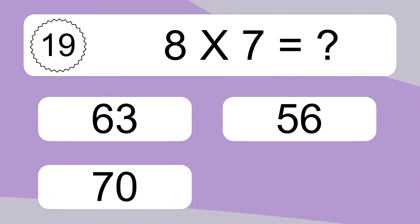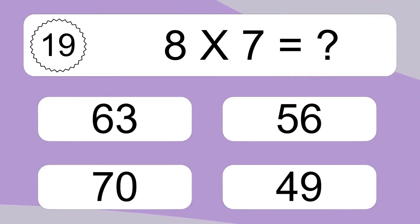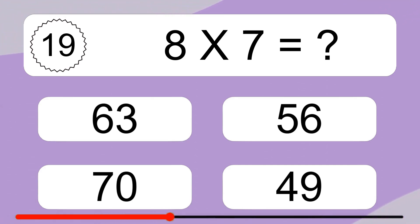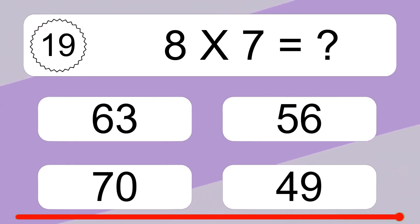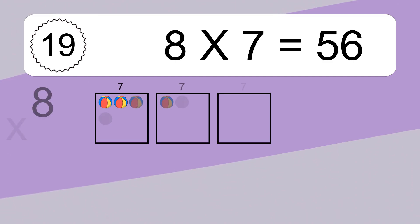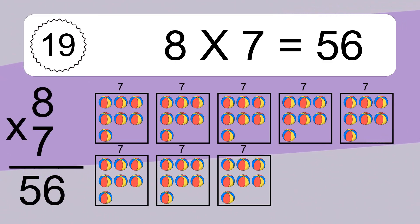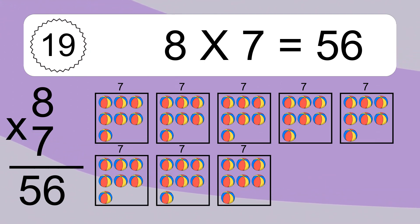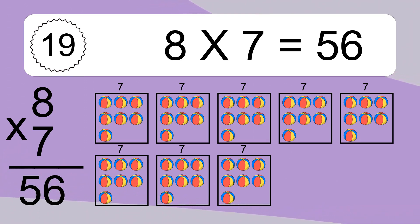8 times 7 equals what? 8 times 7 equals 56. We have 8 boxes, and each box has 7 colorful balls inside. If you count all the balls in all the boxes together, you will have 8 times 7 balls. This equals 56 balls.